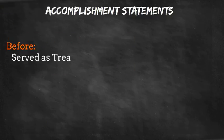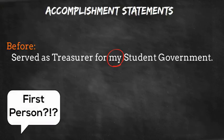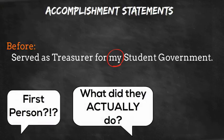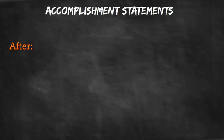Watch how we can transform a position description into an effective accomplishment statement. The initial entry simply identifies the role and does not offer anything regarding achievements or accomplishments. The reader is left to make assumptions regarding the person's effectiveness in that role. Most employers would not take such a risk in fear that the person was ineffective.